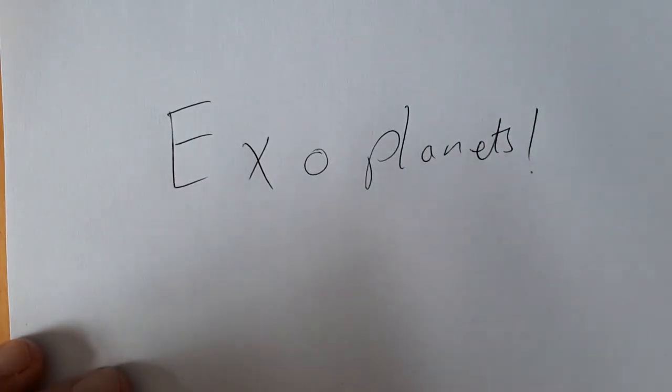We knew there were billions and billions of stars. We had no idea whether any of them had anything going around them, whether there were any planets outside the solar system. We now know that there are lots and lots and lots of solar systems and planets out there.